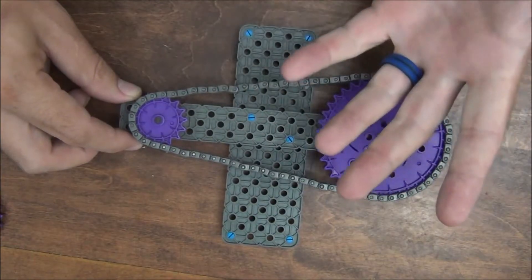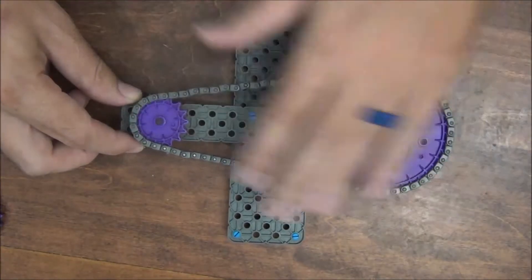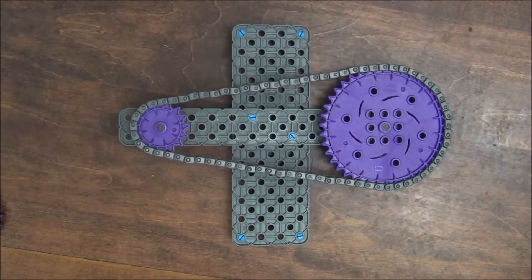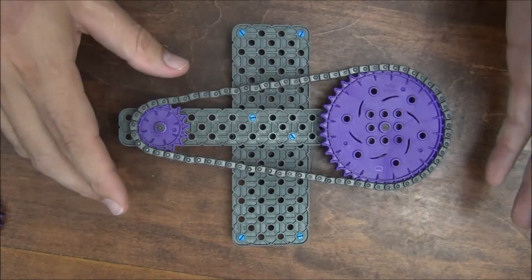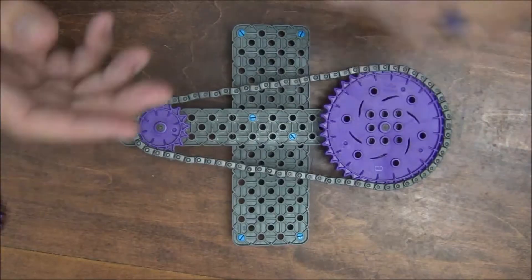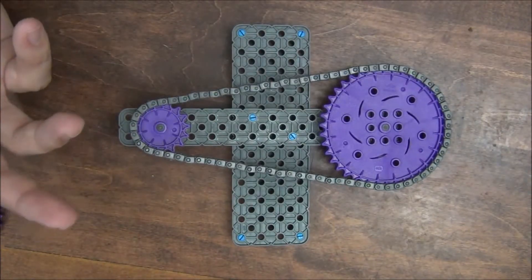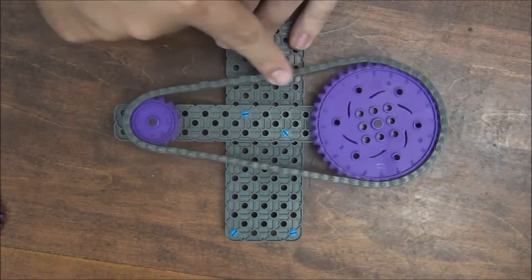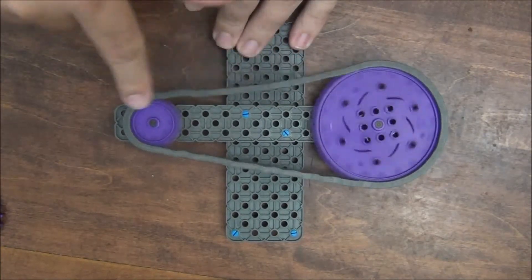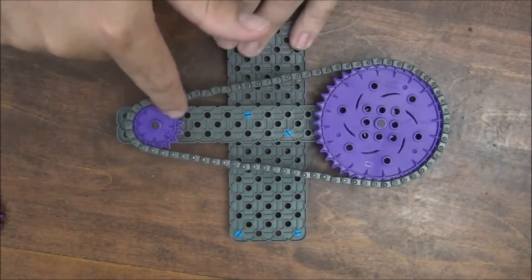The other neat thing is that you can use chains and sprockets to transfer power in different ways and different directions. So in this case, we've got a chain and sprocket connected by a simple chain. When one spins, the other spins.